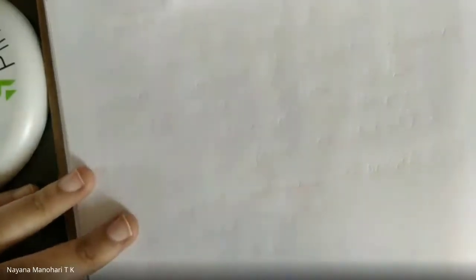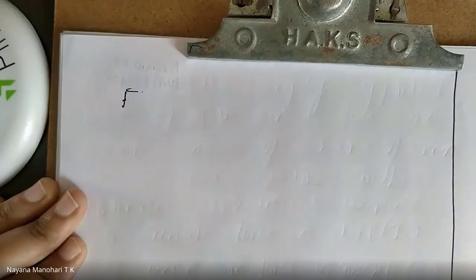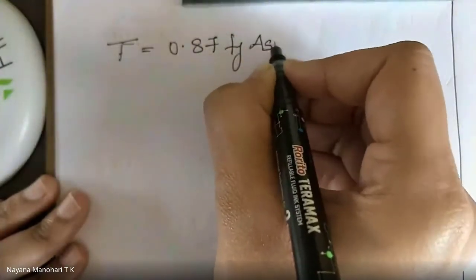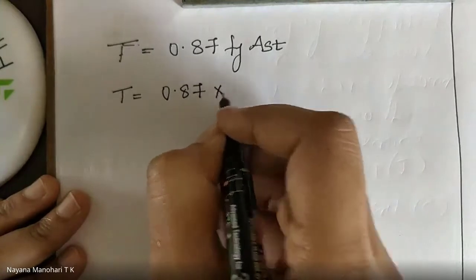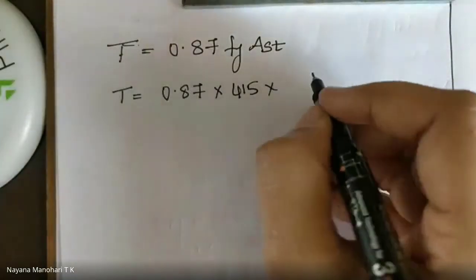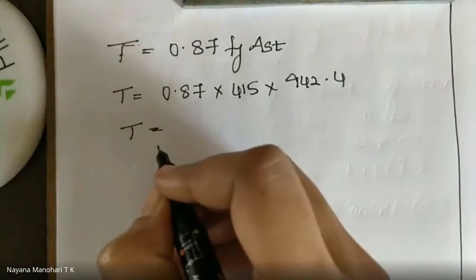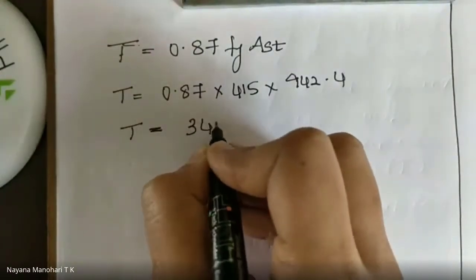First, calculate tensile force in steel. The total tensile force in steel is given by T = 0.87 × FY × AST. Substituting: T = 0.87 × 415 × 942.4. The T value is 340.27 kN.